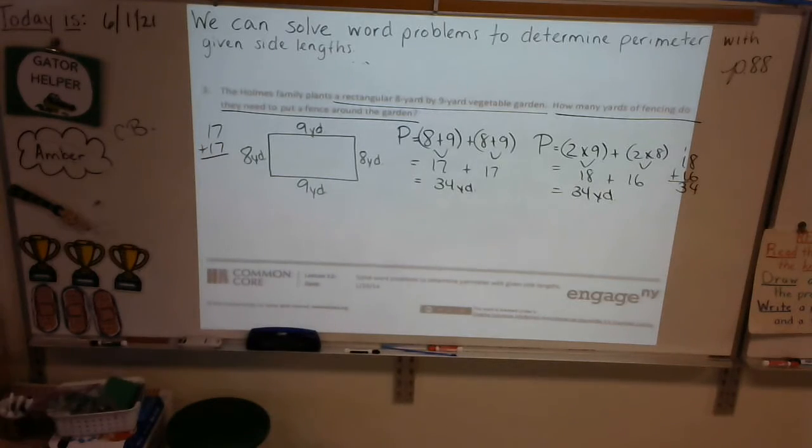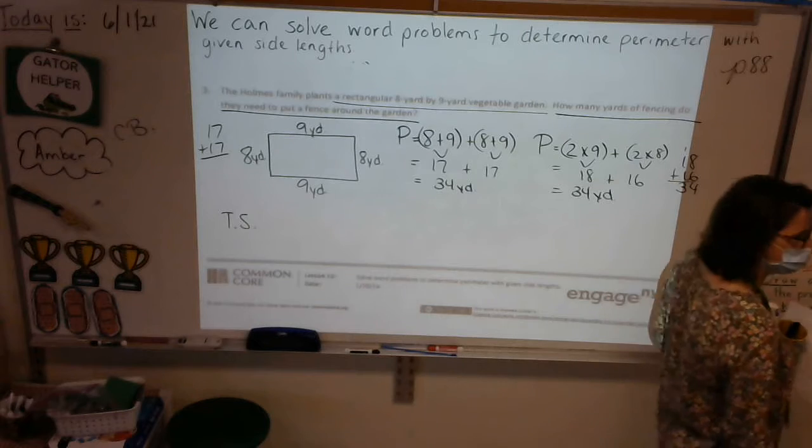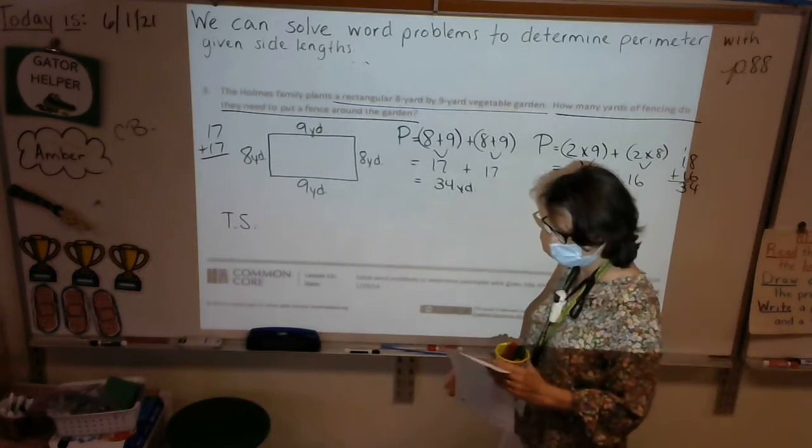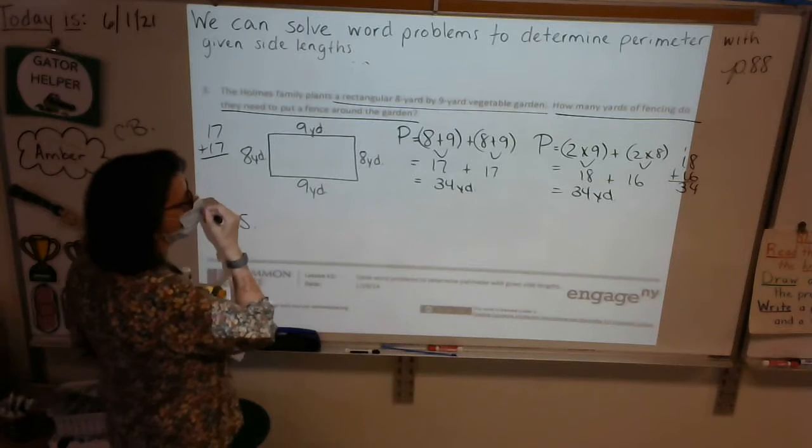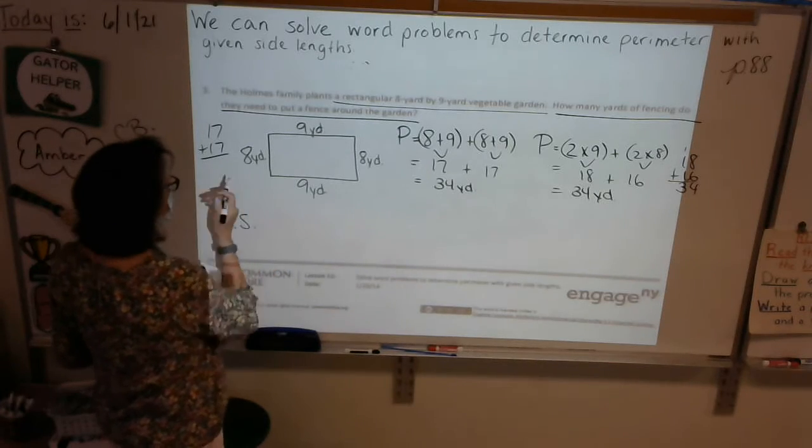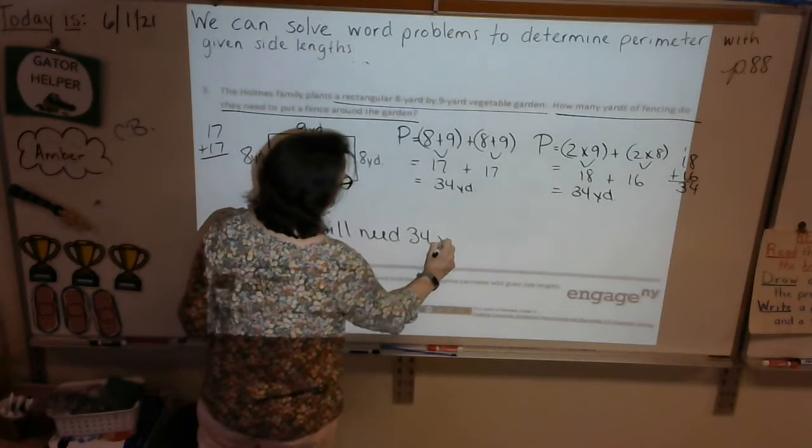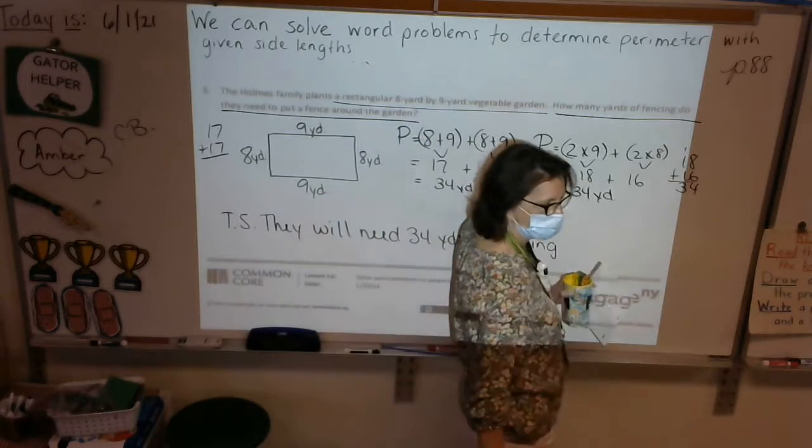Let's go ahead and write our target sentence to answer that. How many yards of fencing do they need? You are going to write your target sentence. They will need blank yards of fencing. Anybody want to share their target sentence with me so I can write it instead of me always sharing with you? Eli would write. How many yards of fencing do they need? They will need 34 yards of fencing. Beautiful. They will need 34 yards of fencing. Okay. Let's go on to the next one. The next one is going to be a lot. Look at that shape.